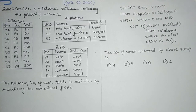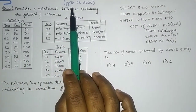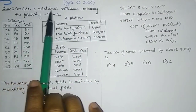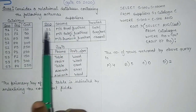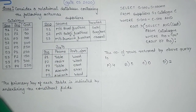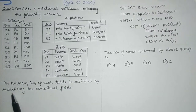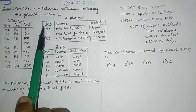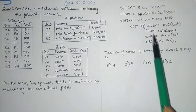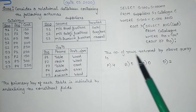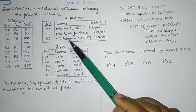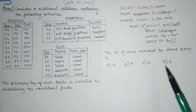Now let's start with the questions. This particular question came in GATE 2020. Consider a relational database containing the following schema. Three schemas were given, and the primary key of each table is indicated by underlining the constituent field. A query is given, and we are asked for the number of rows returned by this query when applied on this table: 4, 5, 0, or 2.